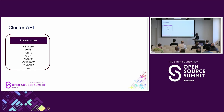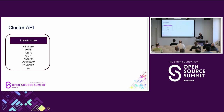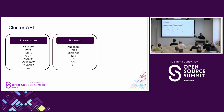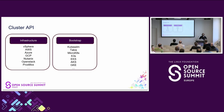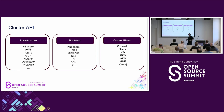Looking at Cluster API's providers: infrastructure providers include vSphere, AWS, Azure, Google, Nutanix, OpenStack, Proxmox — there are 32 official infra providers and at least 10 non-official ones. Bootstrap providers include kubeadm, Talos, MicroK8s, K3s, EKS, AKS, and GKE. This means Cluster API now supports not only self-managed Kubernetes but also managed services, which is very beneficial for multi-cloud scenarios.